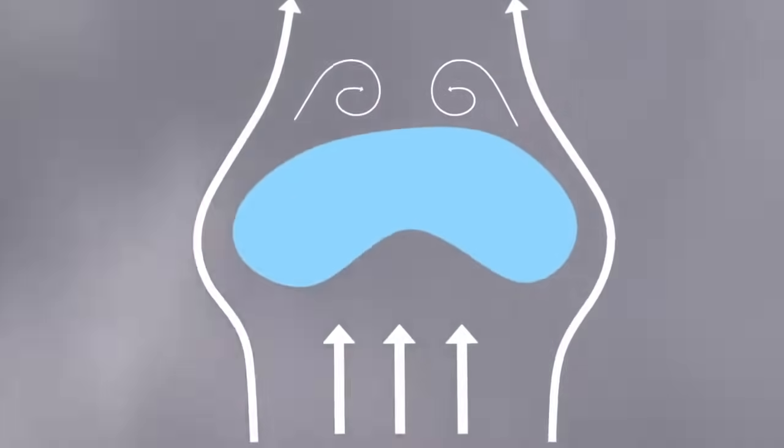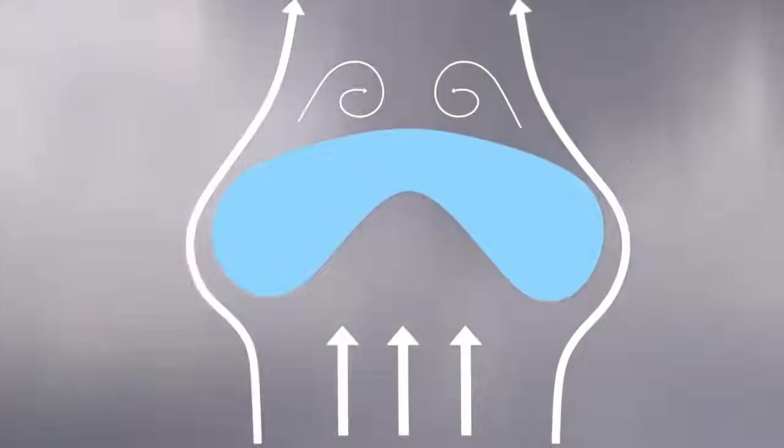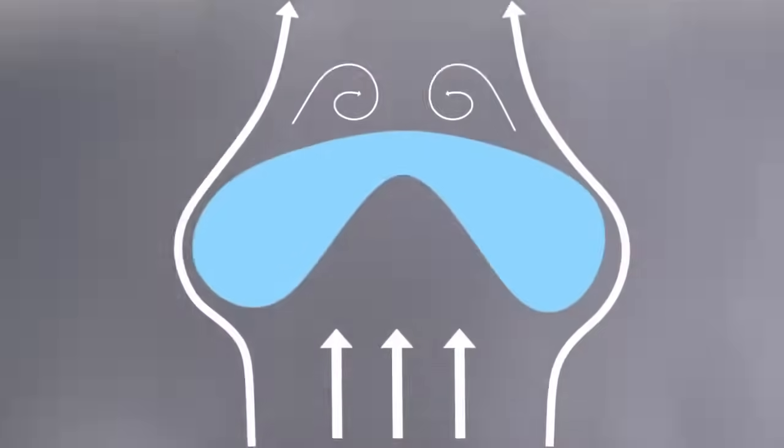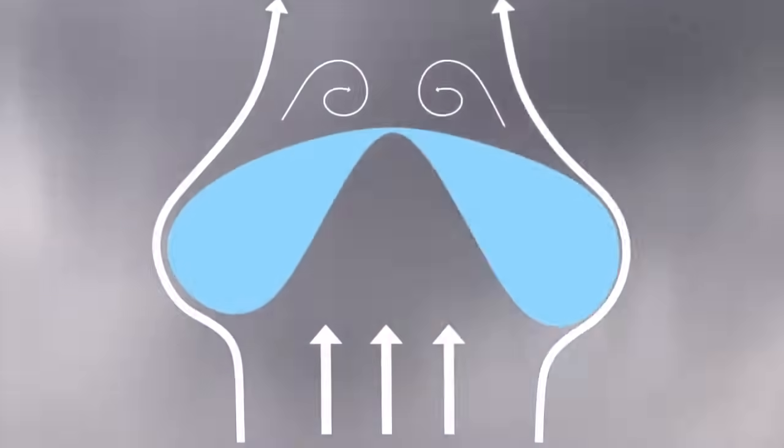resulting in the drop looking like a hamburger bun. As the drop continues to fall and grow, at some point it becomes too large for the surface tension to hold it together. So the raindrop breaks apart into smaller, spherical drops.